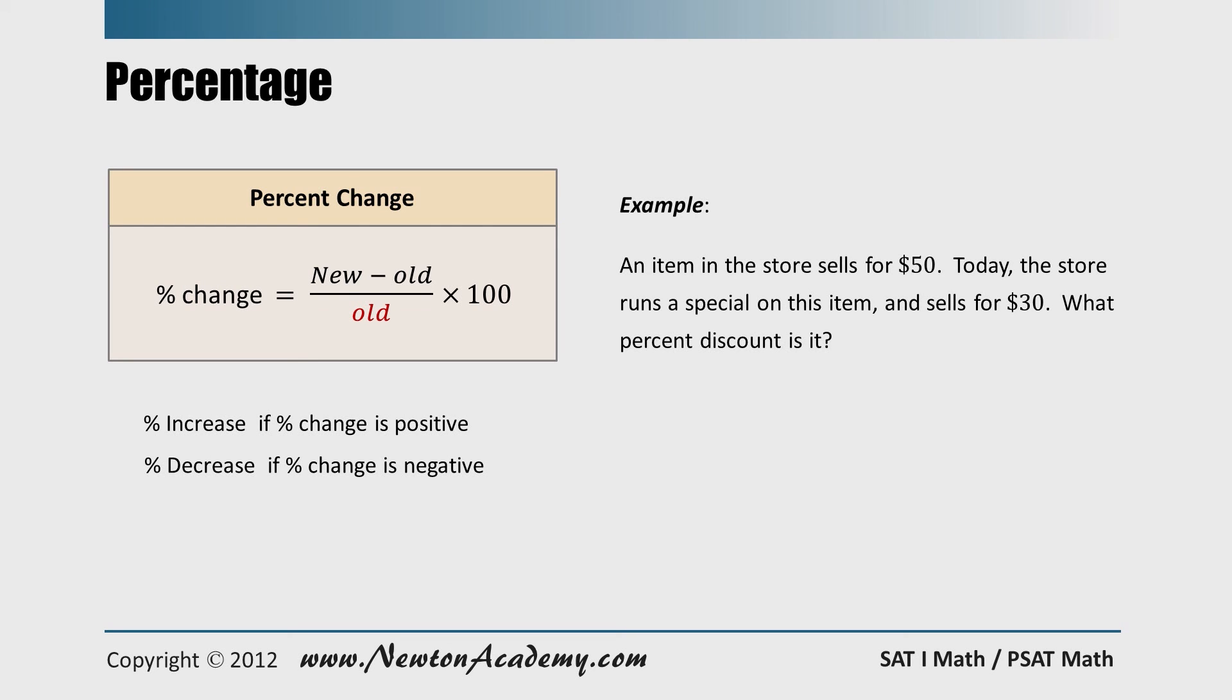Well, let me give you an example. An item in the store sells for $50. Today, the store runs a special on this item and sells for $30. What percent discount is it? Well, here in this problem, old number is 50 and new number is 30. So we have negative 40 percent, which means 40 percent discount. Now, let's solve some problems, and by doing so, everything that I mentioned in this lesson will be completely clarified.